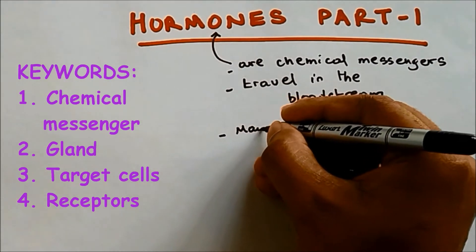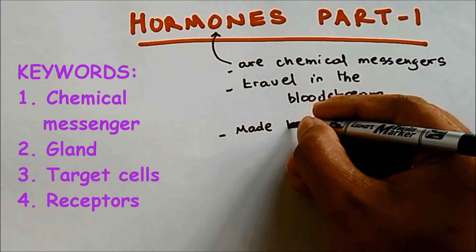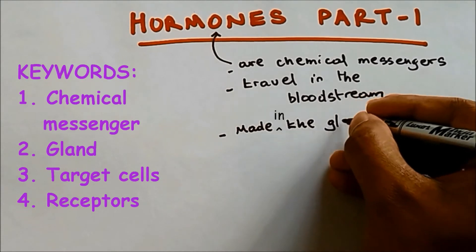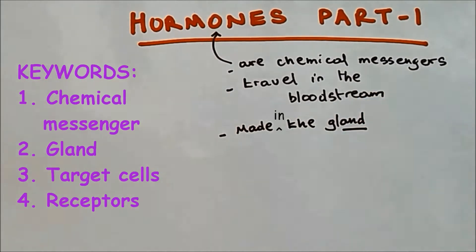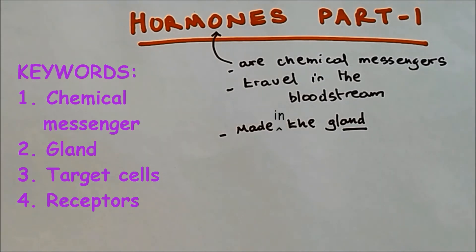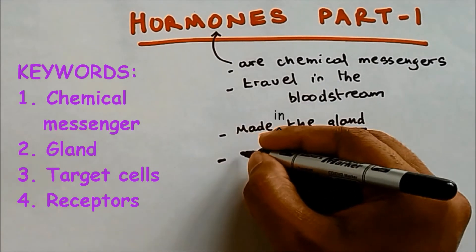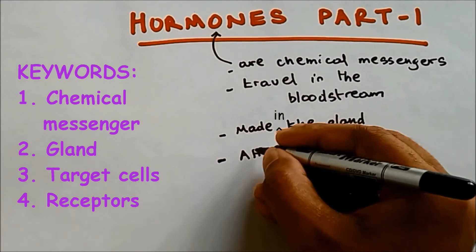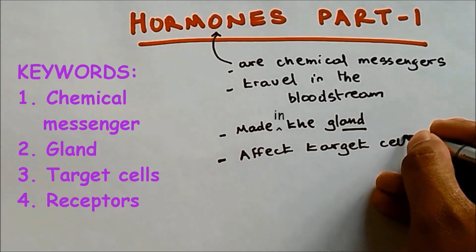They are made in the gland, so the organs making the hormones are called the gland. They don't affect all types of cells — they only affect certain types of cells, and these cells are called target cells.